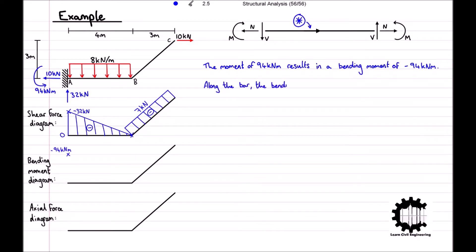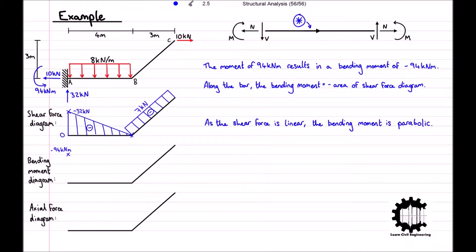Moving along the bar after point A, the bending moment is equal to the negative of the area of the shear force diagram. From point A to point B, the shear force is negative, which means the bending moment increases. The shear force is the derivative of the bending moment, and as the shear force is linear the bending moment is therefore parabolic. The slope of the bending moment equals the shear force, so at point A the slope increases at a rate of 32 kilonewtons, and at point B the slope is flat since the shear force at point B is zero.